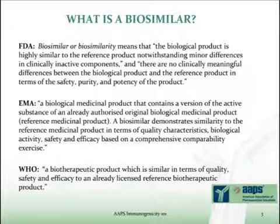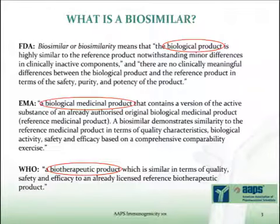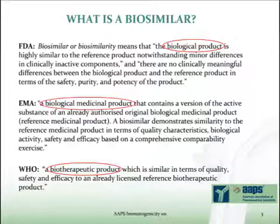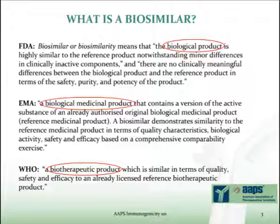One, a biosimilar must be a biological product, like their originator reference products. Biologics are medicinal products produced in living cells or organisms, such as bacteria, yeast, human cell lines, animal cell lines, and plants, and encompass a wide array of biopharmaceuticals, ranging from vaccines and gene therapy products to proteins, blood components, cells, and tissues. Types of biological products include some peptide therapeutics, monoclonal antibodies, receptor fusion proteins, and substances that are similar to key signaling proteins. For this presentation, I will mostly focus on monoclonal antibody therapeutics.